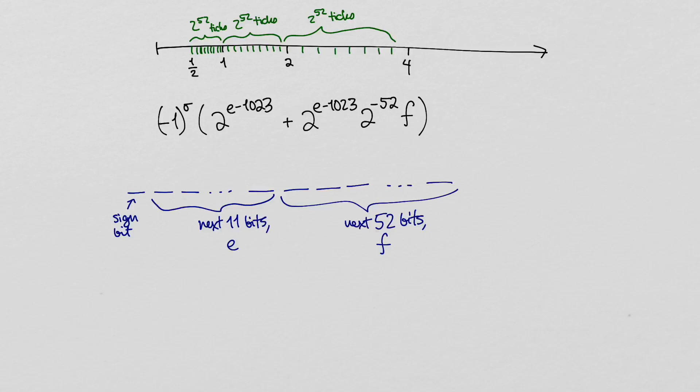The point of subtracting 1023 is to center the range of exponents. We want to be able to scale down or up many times, starting from the interval from 1 to 2. As an example, the third representable value greater than 2 has an e value of 1024 and an f value of 3.